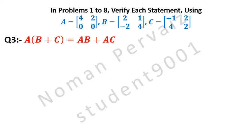In problems 1 to 8, verify each statement using matrix A having elements 4, 2, 0 and 0; matrix B having elements 2, 1, minus 2 and 4; and matrix C having elements minus 1, 2, 4 and 2.